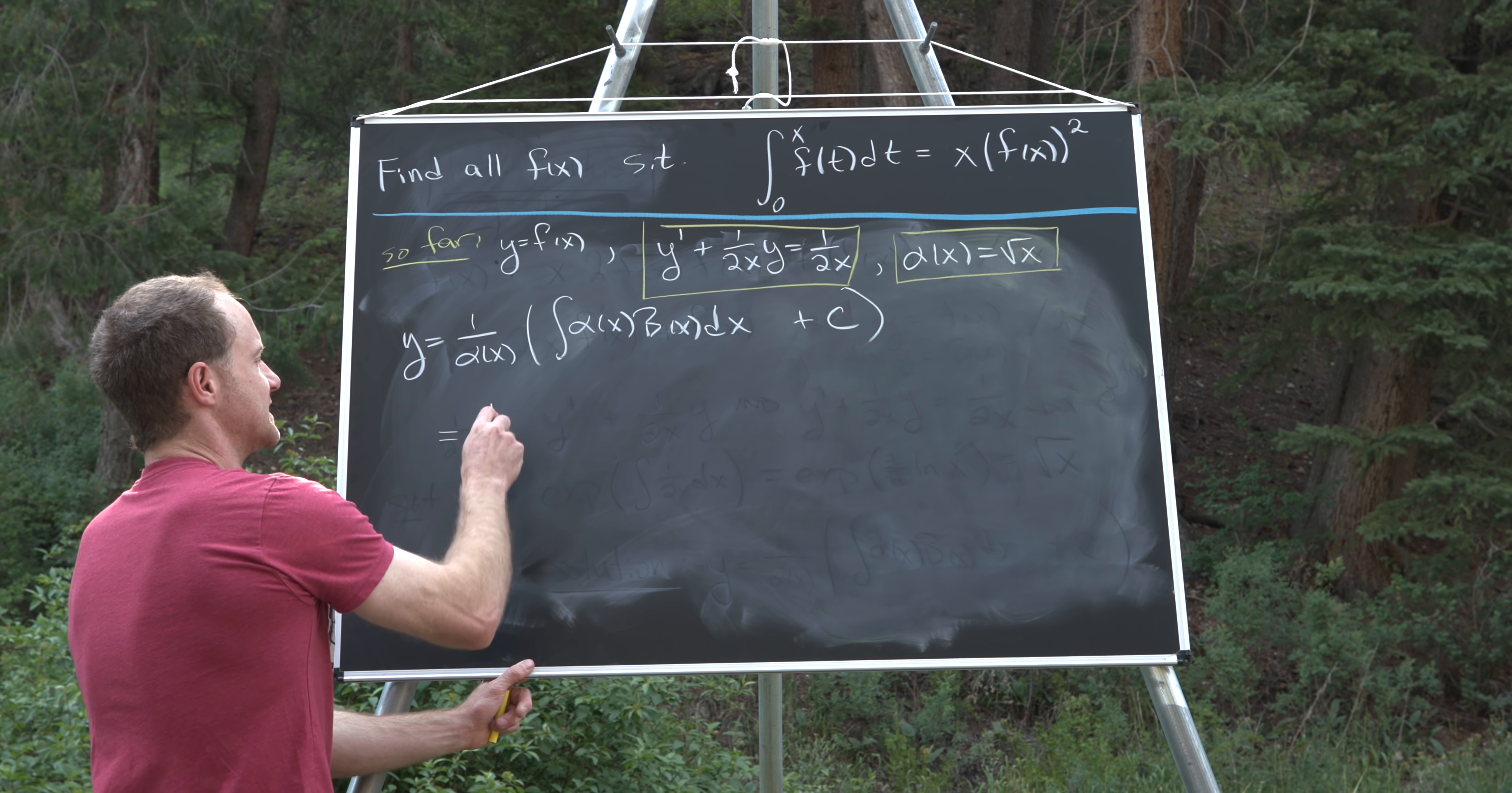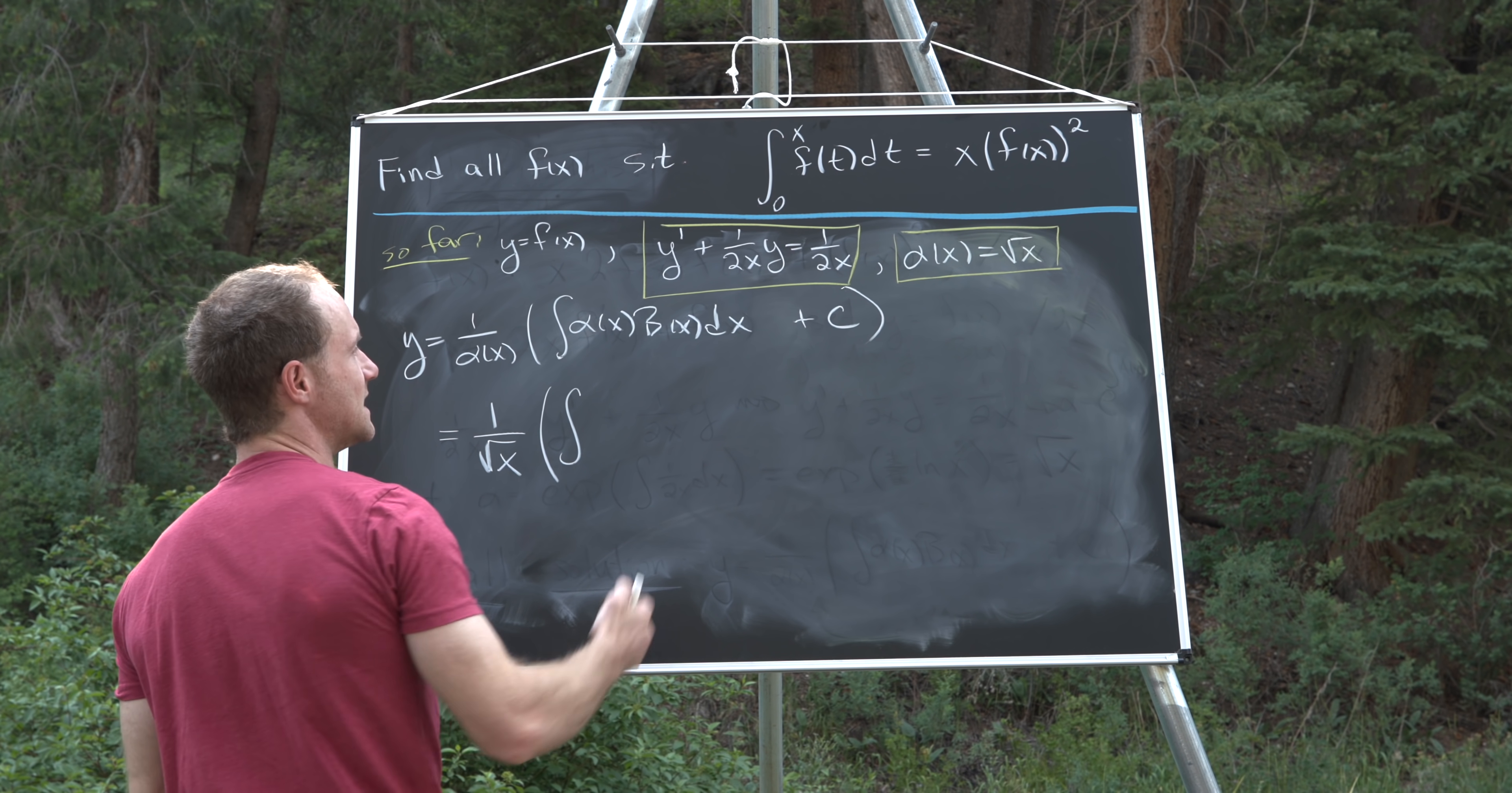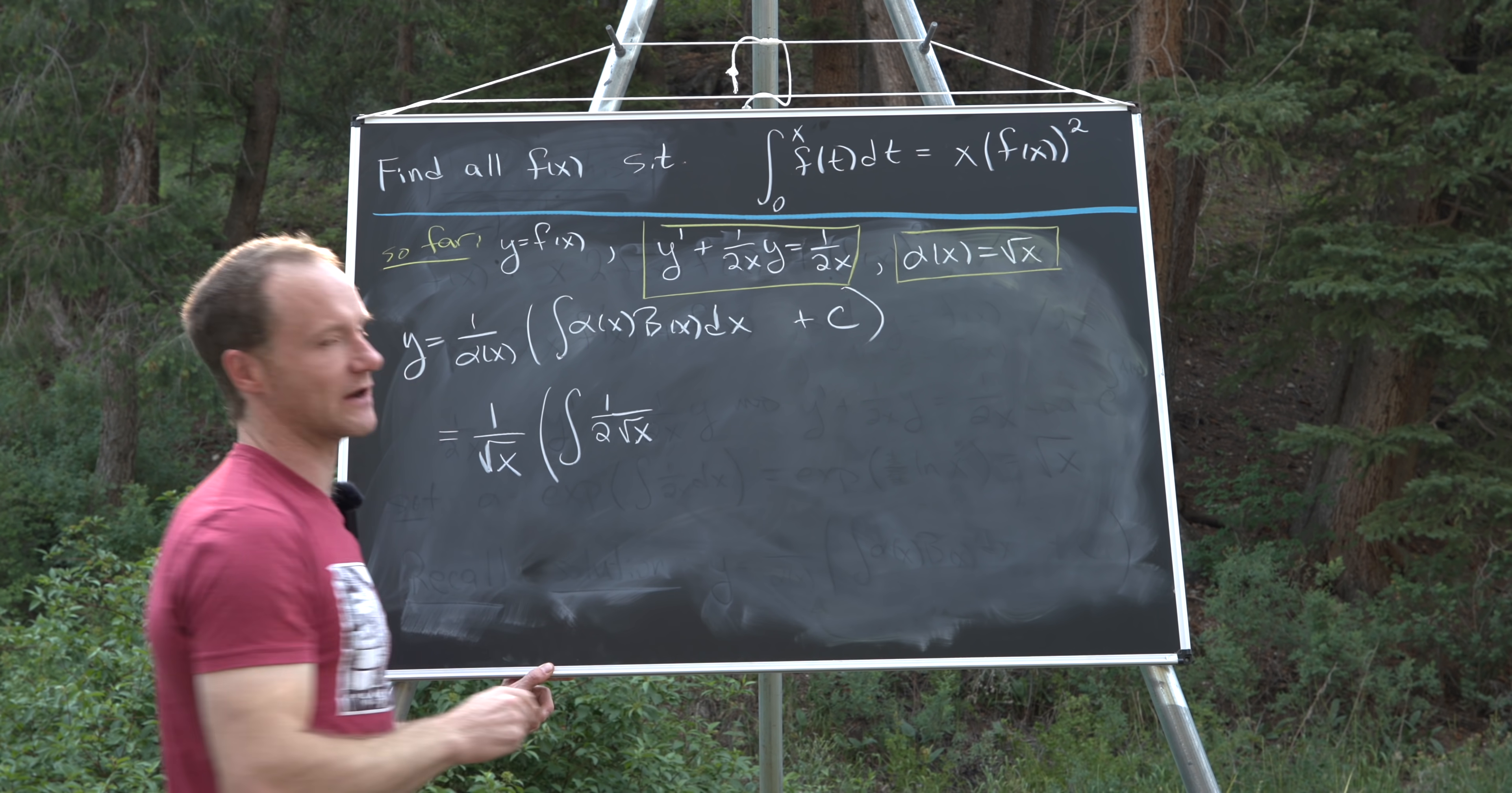So here we've got this is 1 over the square root of x because we've got 1 over alpha. And then we have the integral of alpha of x times b. But notice b is 1 over x or 1 over 2x. So that's going to be one half, and then the square root of x is in the denominator as well.